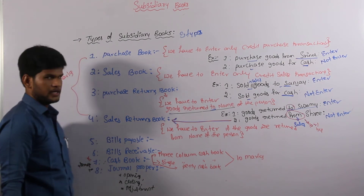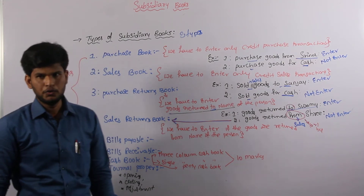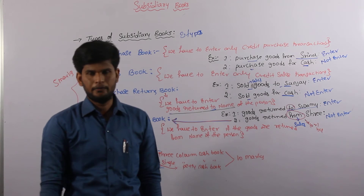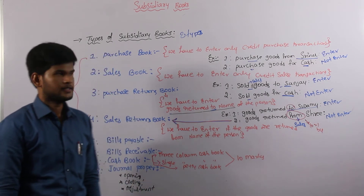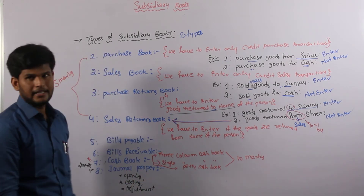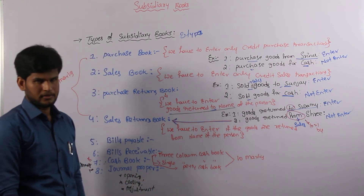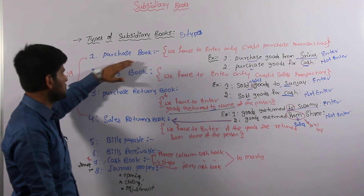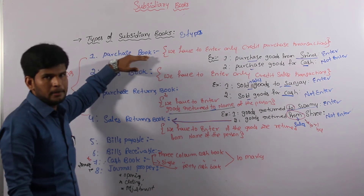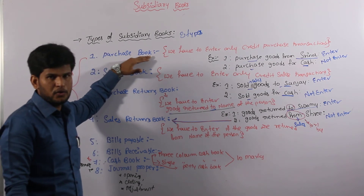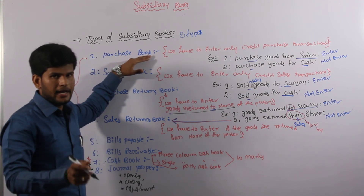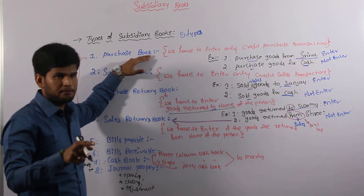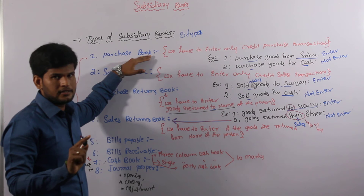Journal proper is related to a 2-mark problem. These are the eight types of subsidiary books. Again I am repeating: the first one is purchase book. In purchase book we have to enter the name of credit-based purchase transactions.